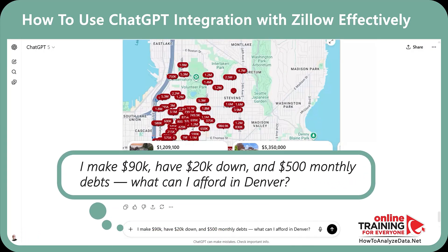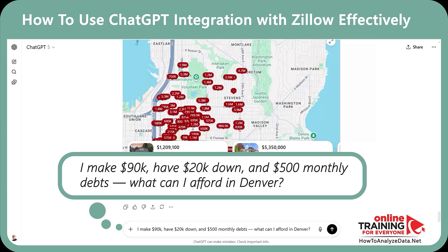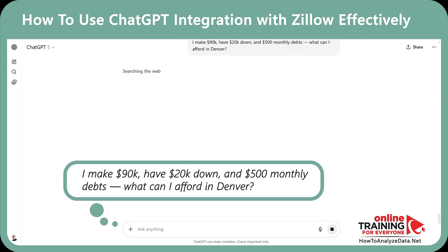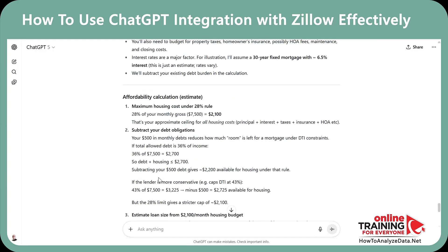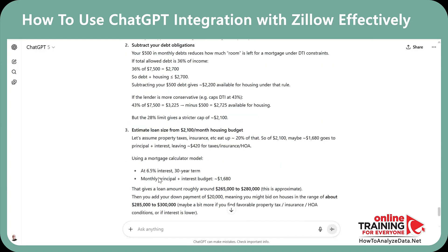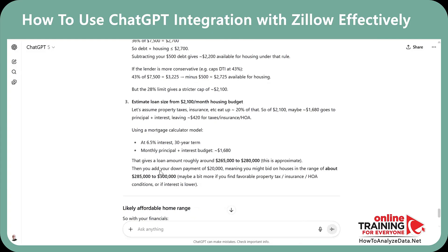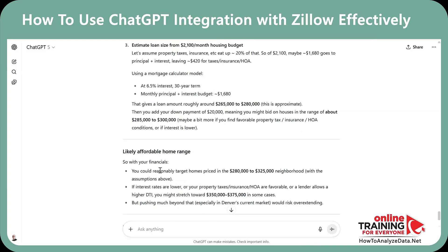"I make $90k, have $20k down, and $500 monthly debts. What can I afford in Denver?" ChatGPT will generate key affordability rules and assumptions, do affordability calculations, rationalize the logic, and create a likely affordable home range.